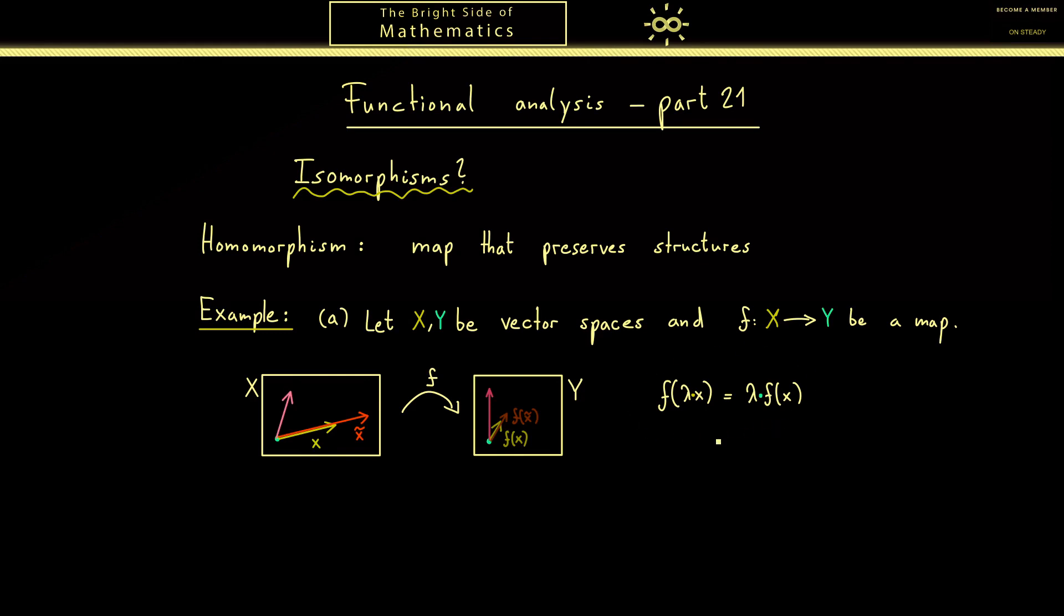Now in the same way we also want to preserve the vector addition. Hence it looks similar: for two vectors x and x prime, we can first add them and then map, or first map and then add them. Of course I don't tell you something new when I say we call these two properties together linear. Therefore now you know homomorphisms for vector spaces are just the linear maps. With this standard example in mind let's go to the next one.